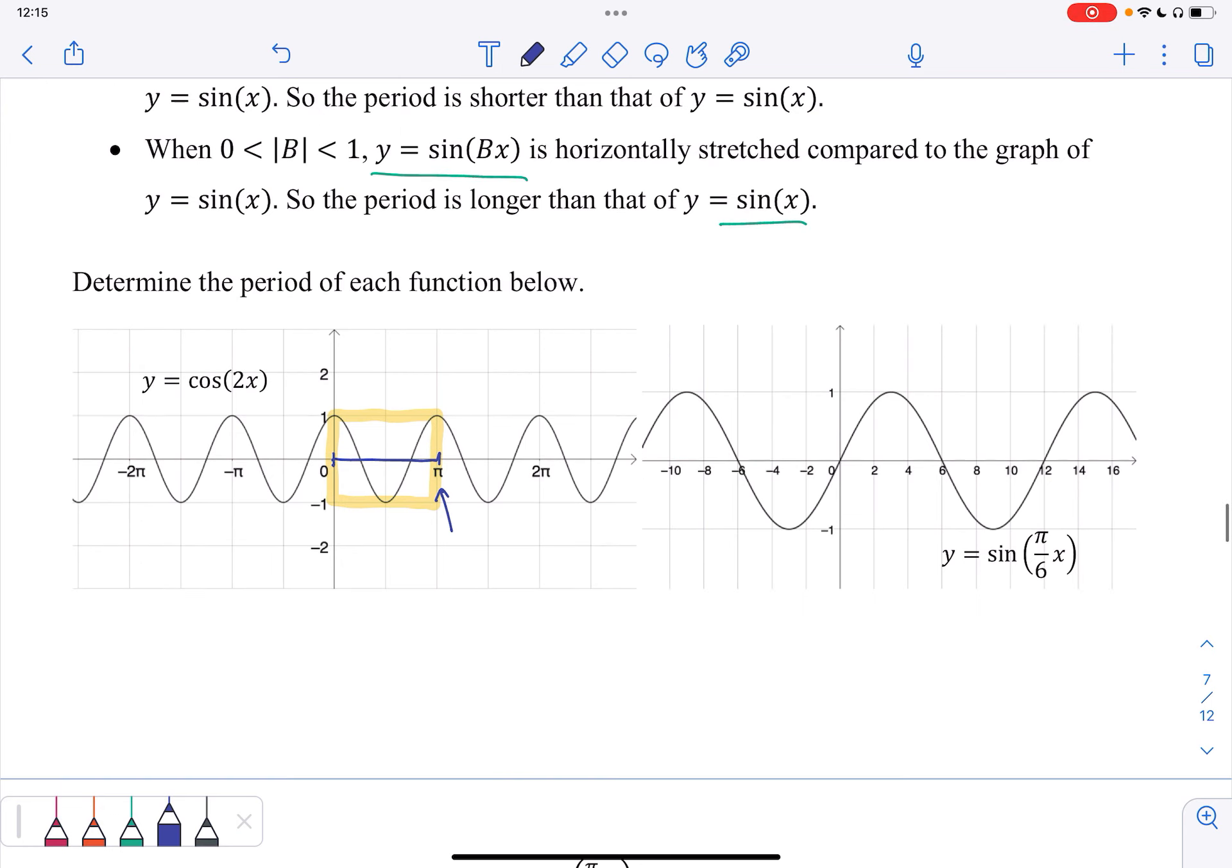So let's see if that matches with what I just learned. I learned that the period is 2π over the absolute value of B. B is 2 in this case. This gives me π, which matches what I have on the graph.